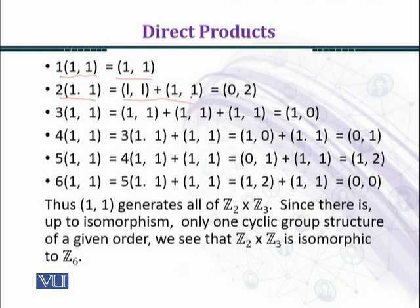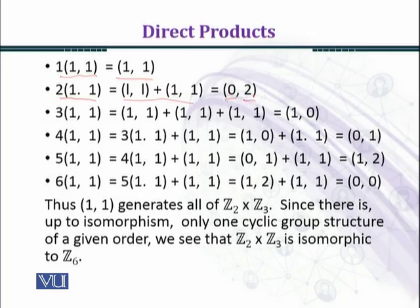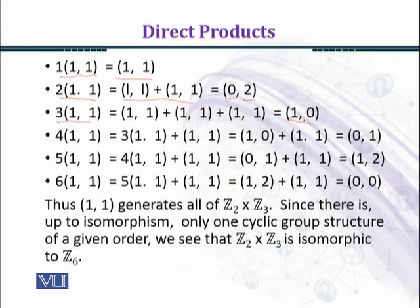Adding (1,1) two times: (1,1) + (1,1) gives (2,2). In the first coordinate, 1+1 = 2 and we are working modulo 2, so we get the class 0. In the second coordinate, 1+1+1 = 3 and under modulo 3 we get 0, and 1+1 = 2 remains 2 under modulo 3. So 2×(1,1) = (0,2) and 3×(1,1) = (0,0)... wait, 3×(1,1): first coordinate 3 mod 2 = 1, second coordinate 3 mod 3 = 0, giving (1,0).